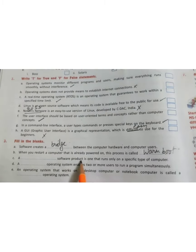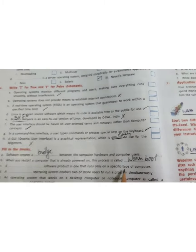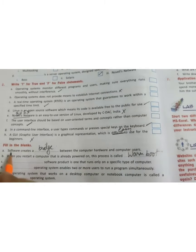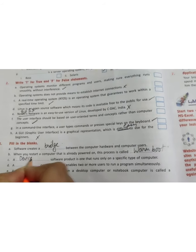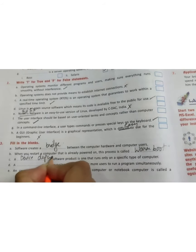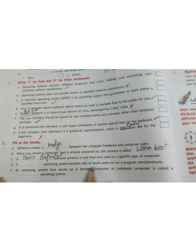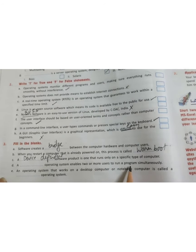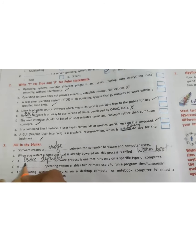A dash software product is one that runs only on a specific type of computer. The answer is device dependent. Next one. A dash operating system enables two or more users to run a program simultaneously. The answer is multi-user.